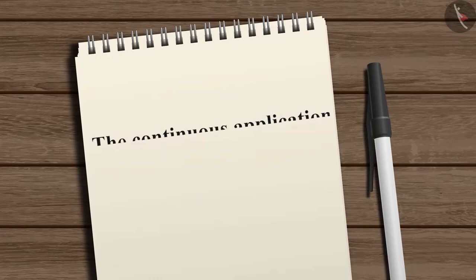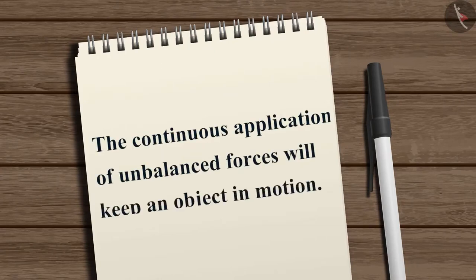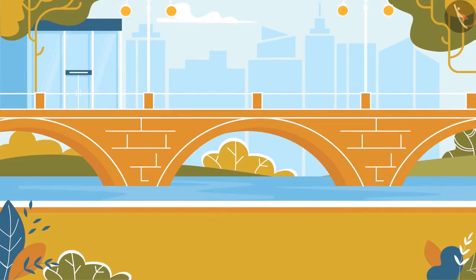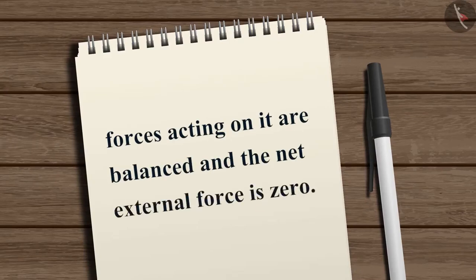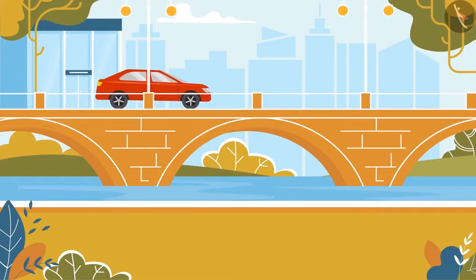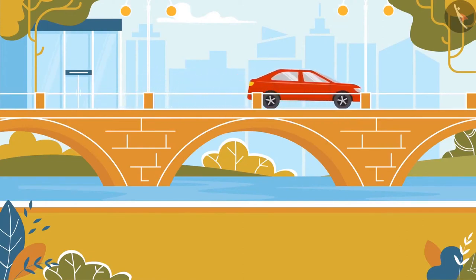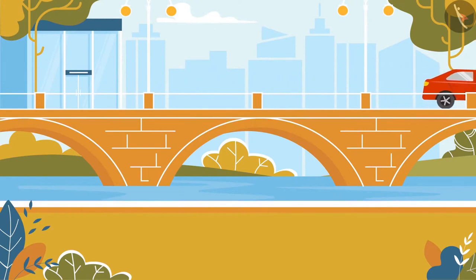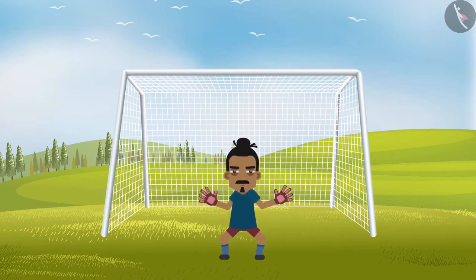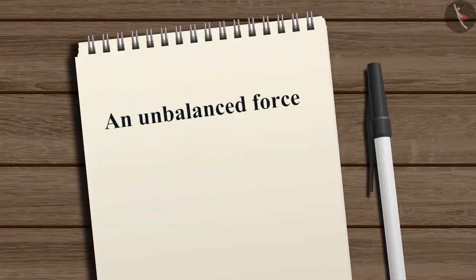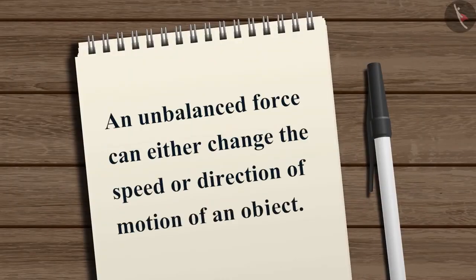Some people get the wrong impression that the continuous application of unbalanced forces will keep an object in motion. The correct understanding is that any object will maintain its state of rest or state of motion when all the forces acting on it are balanced and the net external force is zero. A change in state is observed only when an unbalanced force is applied. An unbalanced force can either change the speed or direction of motion of an object.